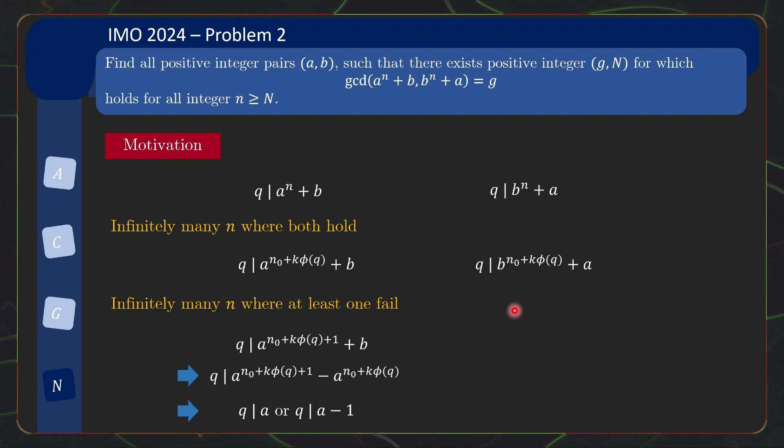The same argument can be used for the b side. So q divides b or q divides b - 1 if the divisibility does not fail. So if we avoid q dividing a, b, which can be done if we even make a and b coprime with q, then at least one of the divisibilities will fail unless a and b are both congruent to 1 mod q.